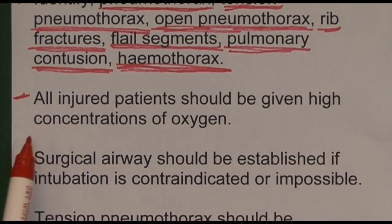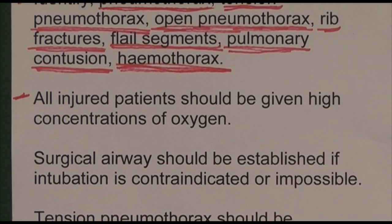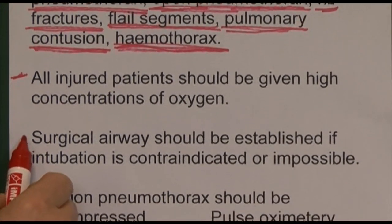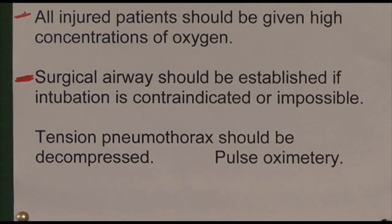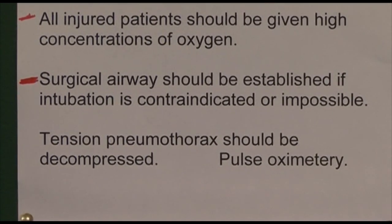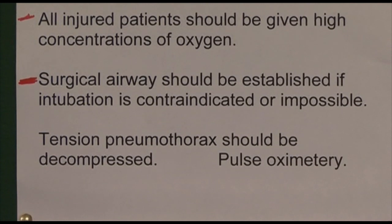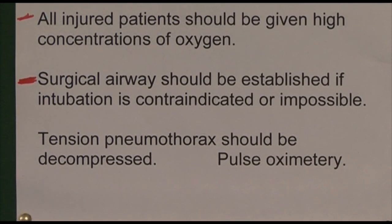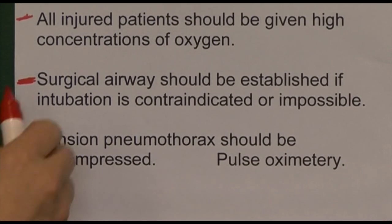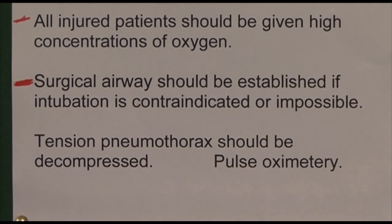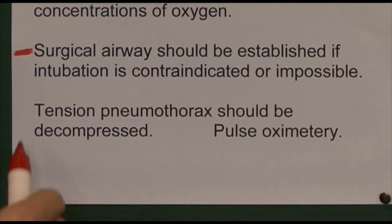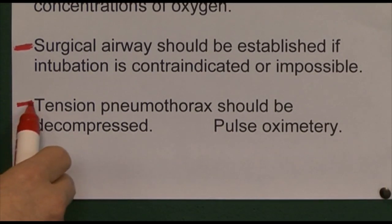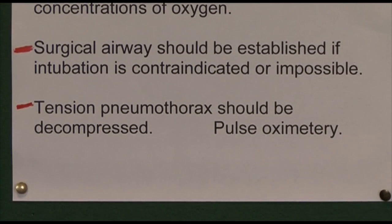If there are still problems with the airway, we can consider a surgical airway — below the thyroid cartilage and above the cricoid cartilage, through the cricothyroid ligament — to establish an emergency surgical airway. If a tension pneumothorax is present, it should be identified and decompressed as an emergency life-saving measure.